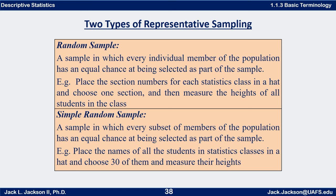A random sample is a sample in which every individual member of the population has an equal chance of being selected as part of the sample. A simple random sample is a sample in which every subset of members of the population has an equal chance of being selected as part of the sample. So a simple random sample is a random sample, but it's a little bit stronger.